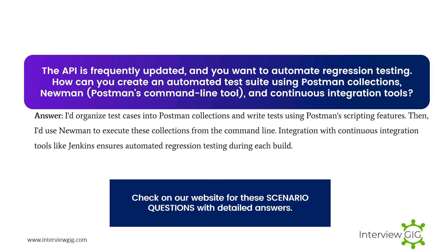The API is frequently updated and you want to automate regression testing. How can you create an automated test suite using Postman collections, Newman (Postman's command line tool), and continuous integration tools? I'd organize test cases into Postman collections and write tests using Postman scripting features, then use Newman to execute these collections from the command line. Integration with continuous integration tools like Jenkins ensures automated regression testing during each build.